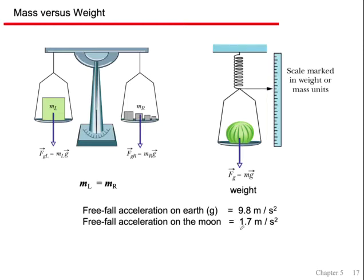Free-fall acceleration on the Moon is about 1.7 m/s². If you used a pan balance on the Moon, it would still work because if it's balanced the same mass must be on each side. But if you used a spring scale on the Moon, that same melon would only pull it down a smaller distance, so the arrow would point to a lower reading.